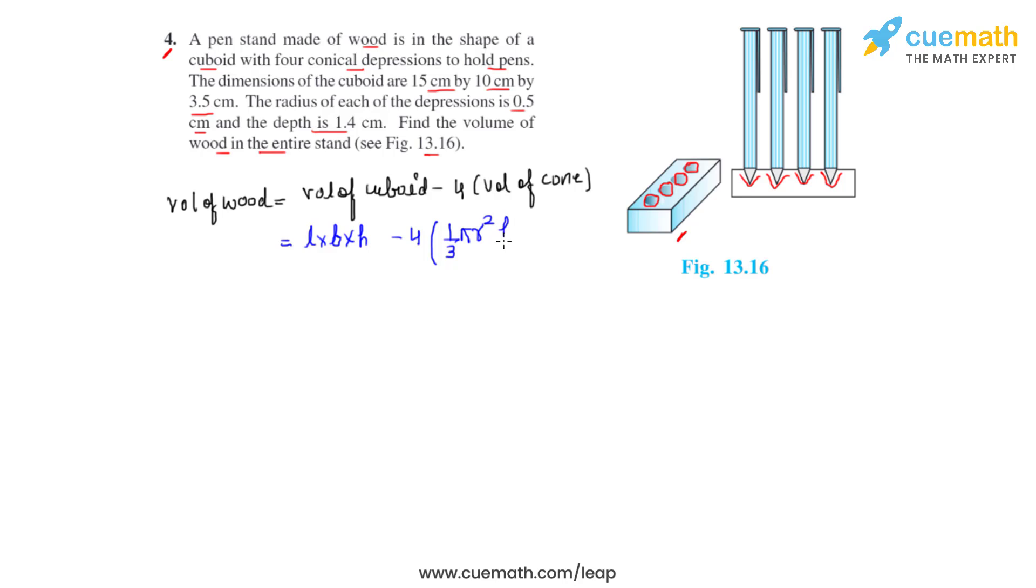We'll take the height for the cone as h1 because the height of the cuboid and the height of the conical depression will not be the same, and when it's multiplied with 4 we can get the total volume of the four conical depressions.